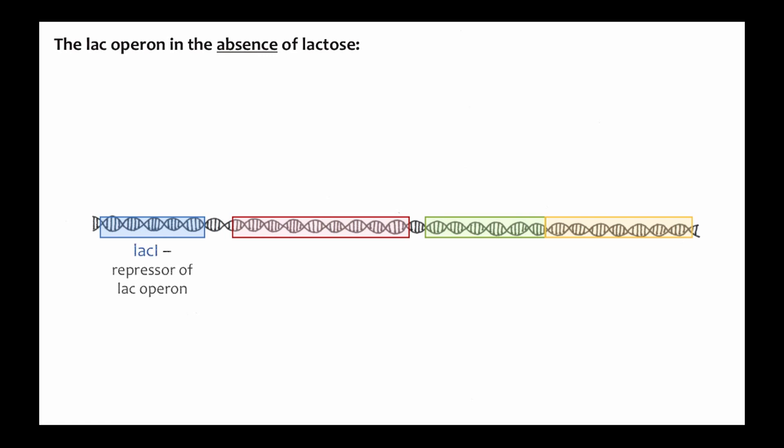Lac I encodes a repressor of the lac operon, and this gene is controlled separately from the other genes. Lac Y encodes a transporter that allows lactose into the cell, where it can be used. And Lac Z encodes an enzyme that cleaves the disaccharide lactose into monosaccharides and can be used for energy production.